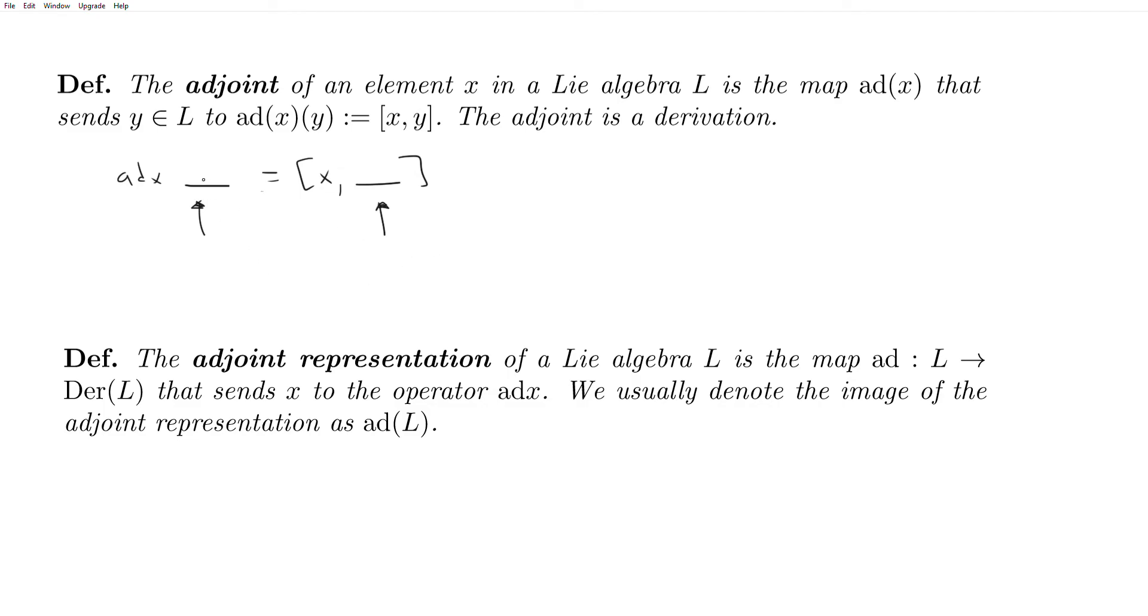And so because it's linear in this component, it's linear in the second component by the bilinearity of the bracket, ad(X) is certainly an element of GL(L). It's a linear operator on L. And so what it actually turns out is that ad(X) is an element of Der(L). And so the notion of Der(L) makes sense because L, as a Lie algebra, is also an F-algebra. We just saw that.